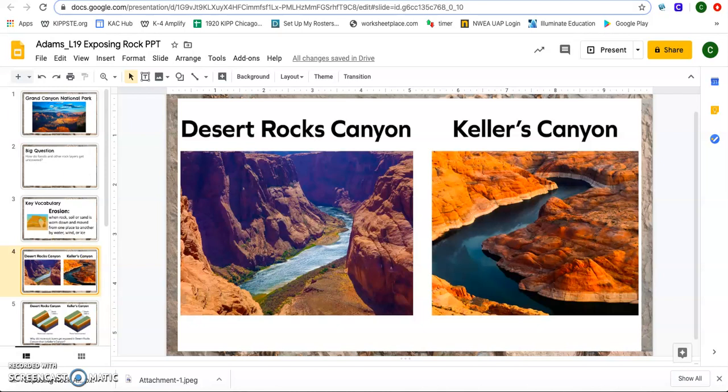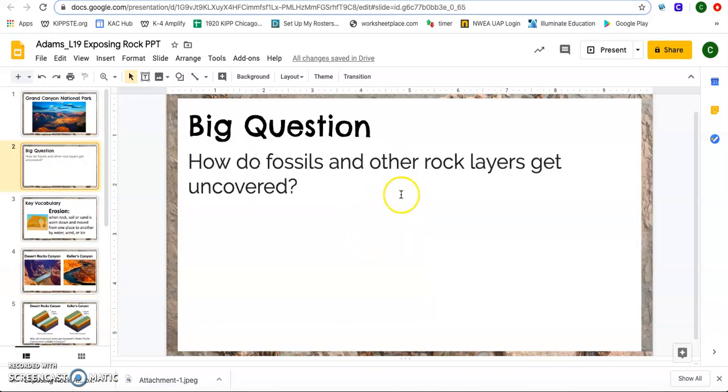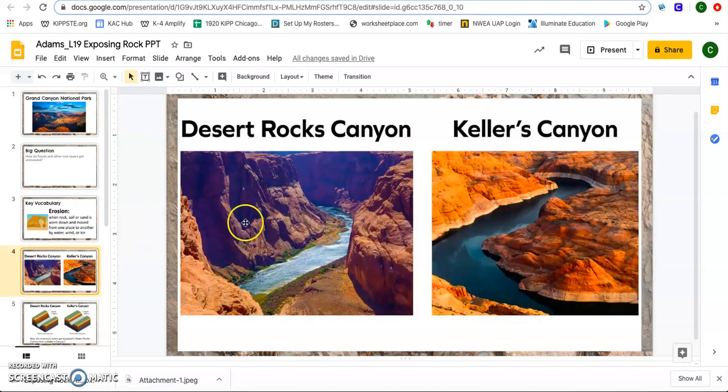And so in answering our big question, we're trying to figure out how are other rock layers getting uncovered? We see all this rock layer that is uncovered and we know that more rock is uncovered here in the Desert Rocks Canyon than in the Keller's Canyon. But how does that happen? And so this is what we want to dig deeper into today.